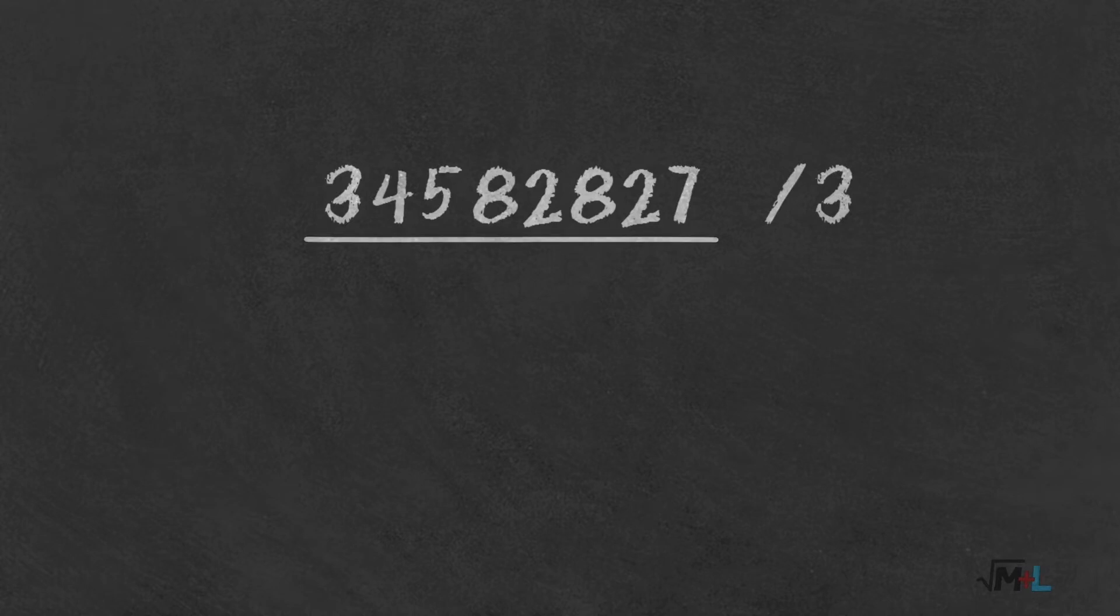34582827 by 3. No worries, there is no too big number for this method. So 3 by 3 is 1, next is 4, so we go down 1 to 3. So it's again 1 but with that remainder. So next is 15 by 3 which is 5.